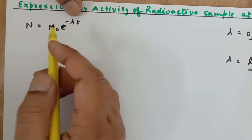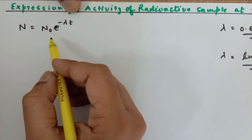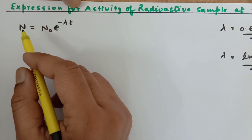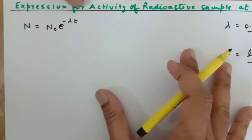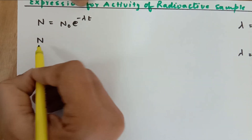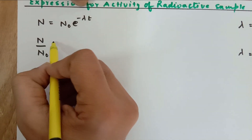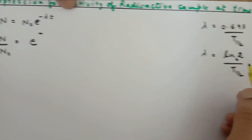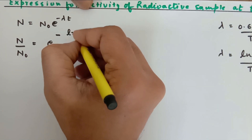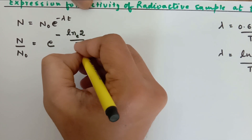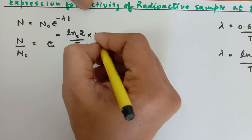Now, n₀ is the number of undisintegrated nuclei at time t = 0, whereas n is the number of undisintegrated nuclei at time t. So first I am going to bring this under n. So n upon n₀ is equal to e raised to minus, and instead of lambda I am going to substitute ln 2 to the base e upon t-half, times t.